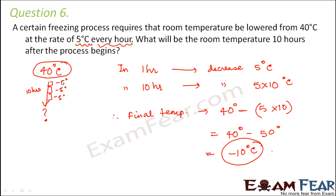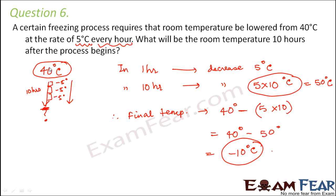The total decrease in temperature is 50 degrees — this much the temperature will decrease. So the final temperature is 40, that is the initial value, minus 50, which is the total decrease. So 40 minus 50 gives the final temperature of minus 10 degrees Celsius.